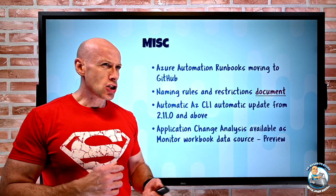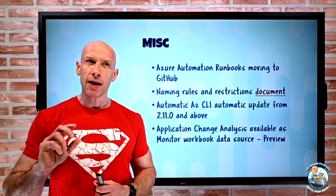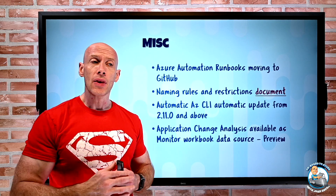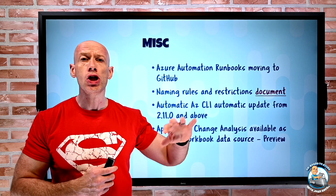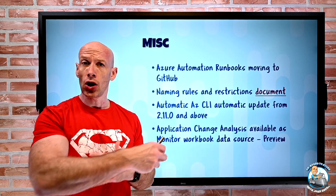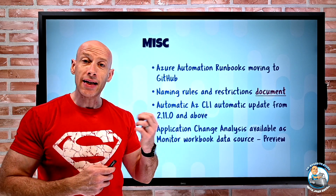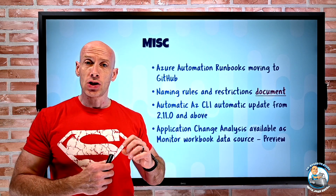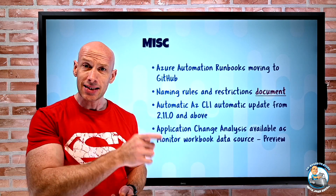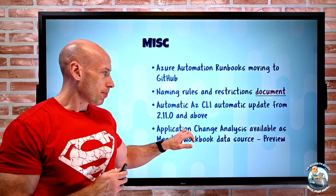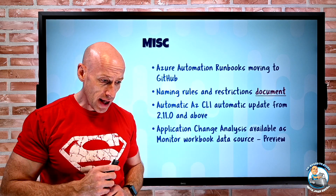Application Change Analysis, which I've talked about in a number of previous weeks, is the ability that hooks into the Azure Resource Graph and enables you to look back at what's changed over a certain environment. That's now available as a workbook data source. When you create a custom workbook, one of the sources you'll now see is Application Change Analysis, so you can create various workbooks and queries based off of that.